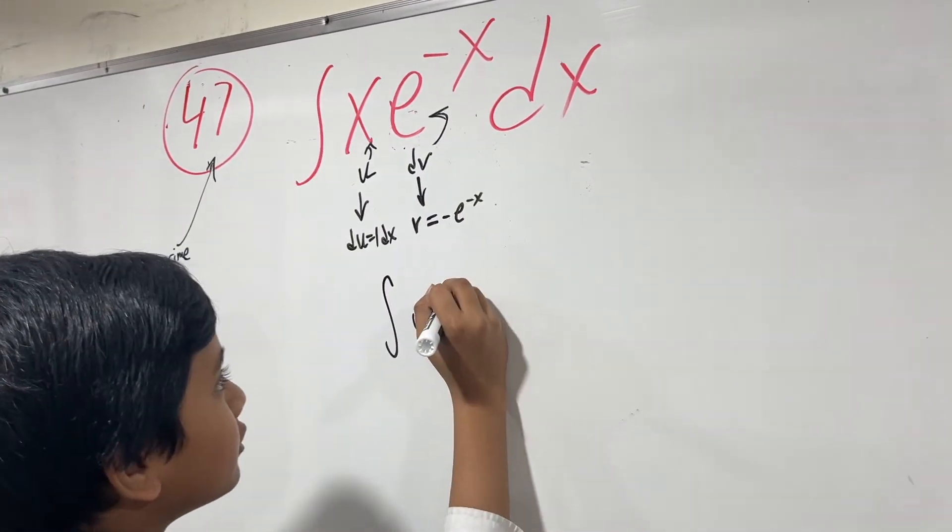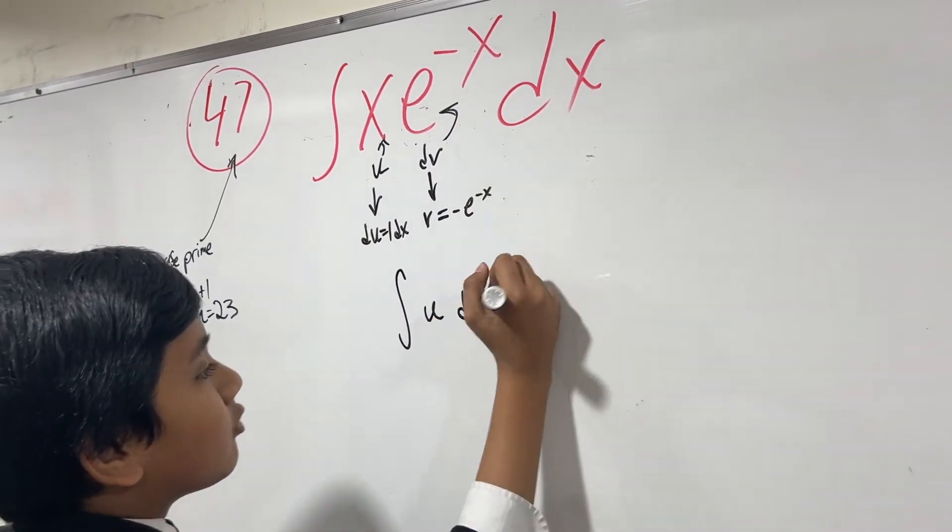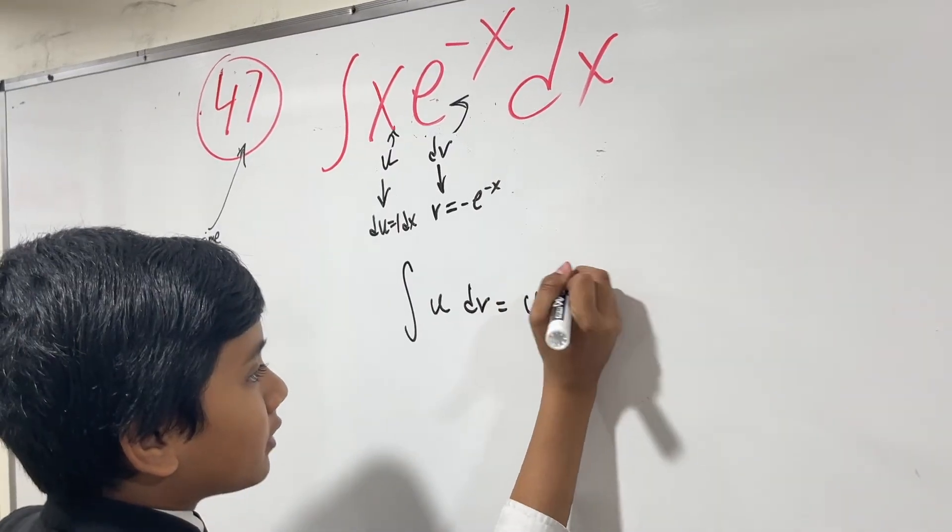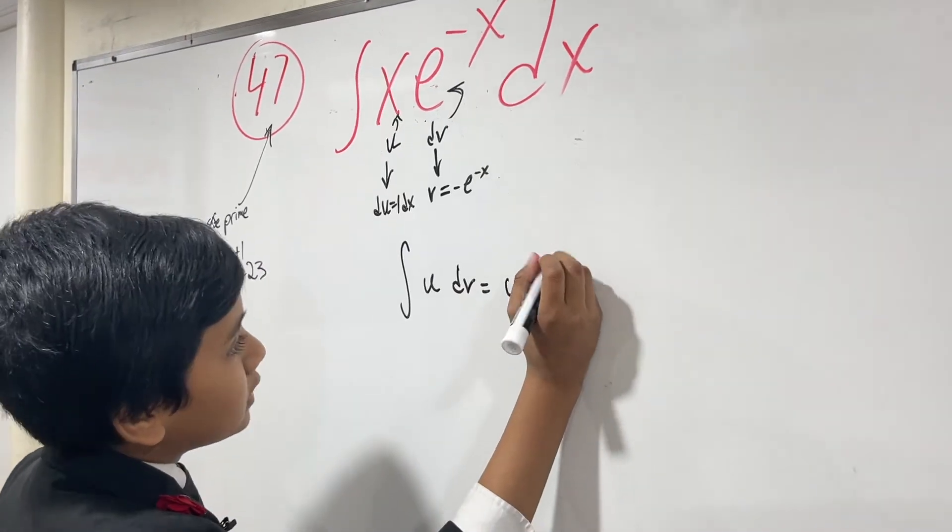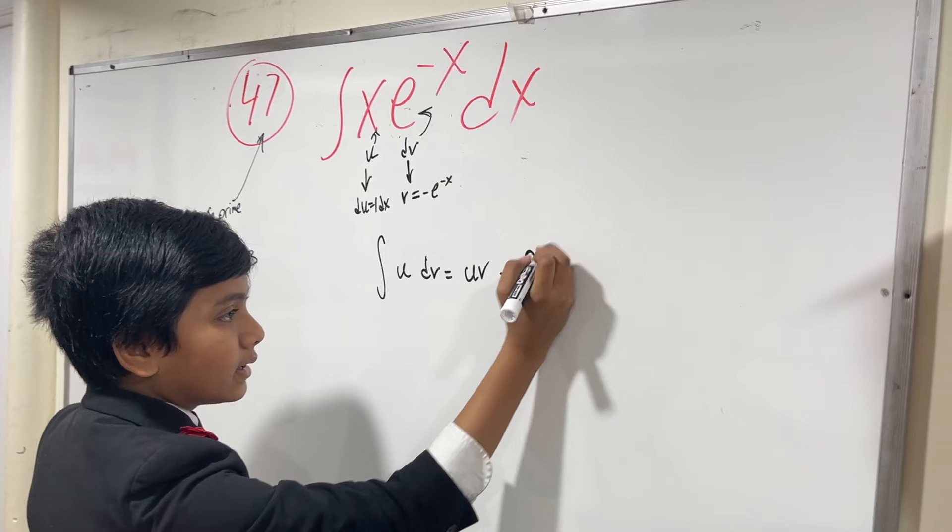We understand that the integral of u dv equals u*v minus the integral of v du.